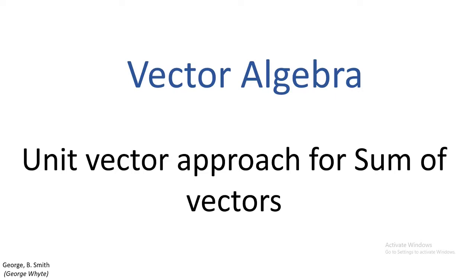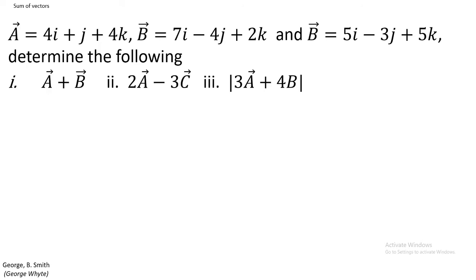In this video we are going to look at how we can use the unit vector approach. With the unit vector approach, assume that you have vectors expressed in component form. Vector A is given as 4i plus j plus 4k, you have vector B, and you have vector C. We want to find the sum of vectors A and B — that sum is also called the resultant.